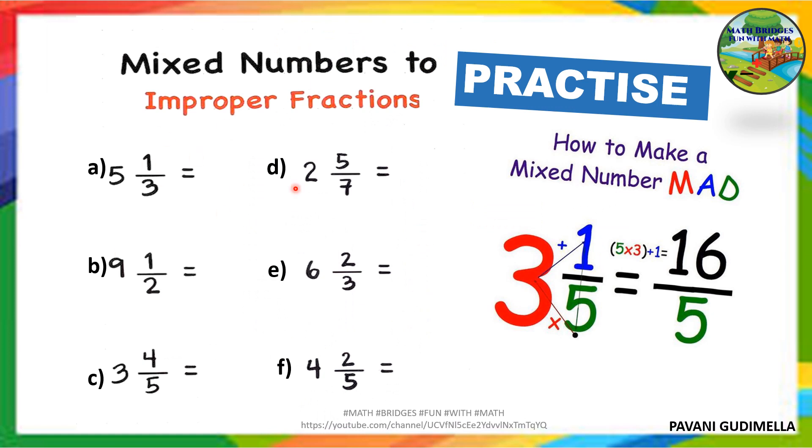Here I have given a few problems to convert mixed fraction to improper. You can note them in your rough copy and practice. Follow this method MAD. It should be in your mind. Multiply, add, and denominator remains same. Or else you can draw an imaginary line like this triangle. Starting from denominator 5, this point you can see 5 into 3: 15. 15 plus 1: 16/5.